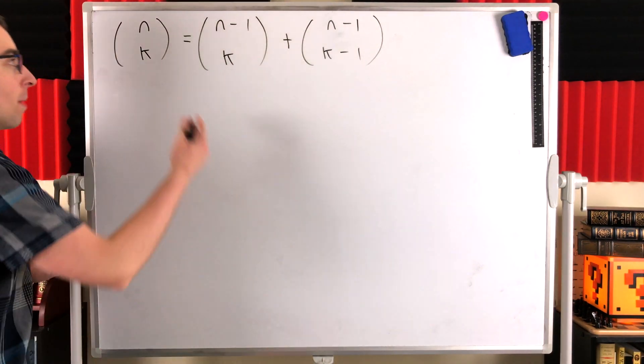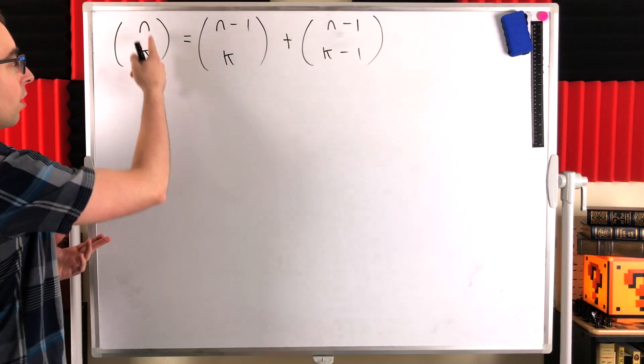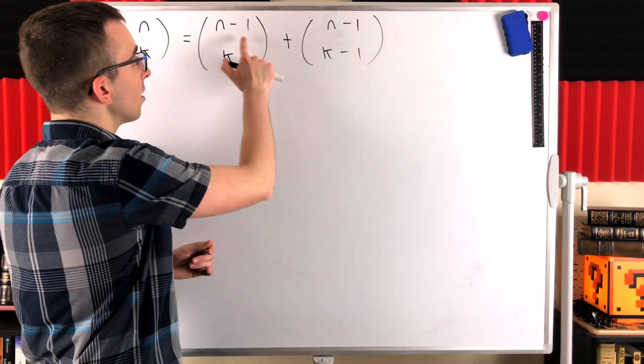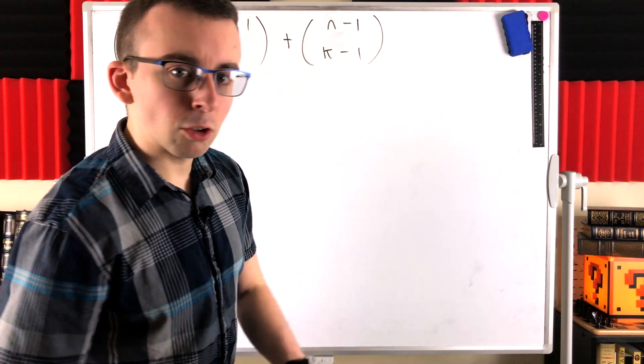So this gives us a way to calculate a binomial coefficient with some particular n value as a sum of binomial coefficients with the previous n value, n minus 1.